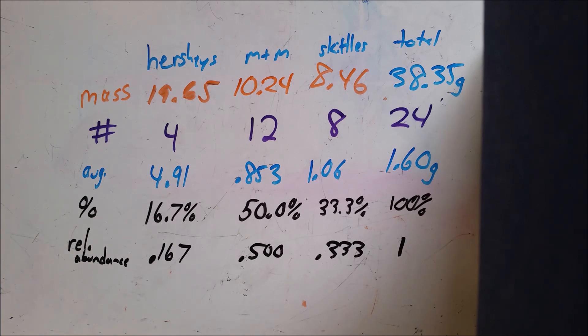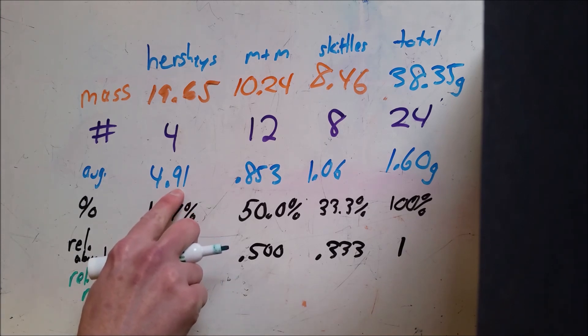So the last thing I'm going to do is I'm going to do something that's new and this is called a relative mass. And a relative mass is a combination of the relative abundance and the mass of one piece. So for that